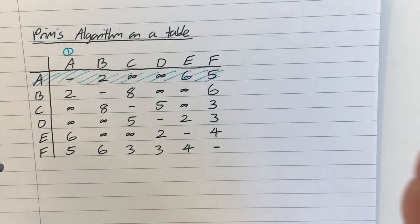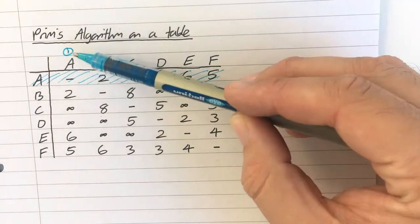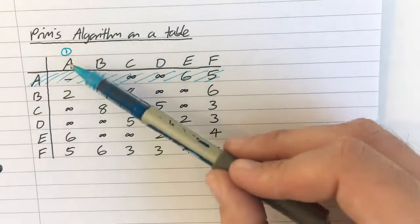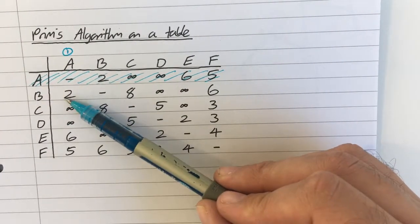And now I look down all of my nodes which are part of my tree, in this case it's just A, and I choose the smallest number. And what that's doing is it's finding the closest node to my tree. So, at this stage, the closest node is B, and it's a distance of 2.